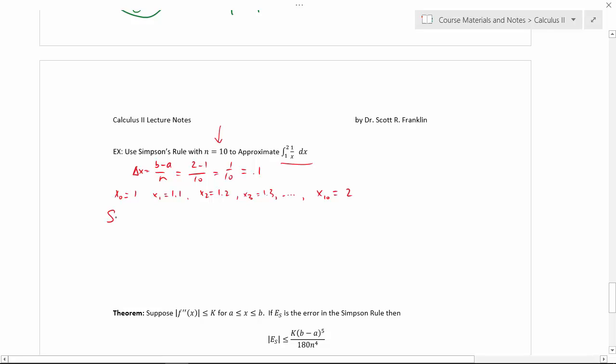Now Simpson's rule says that s, this one-third Simpson's rule says s sub 10 would then be delta x over 3 times f at 1 plus 4 times f at 1.1, plus 2 times f at 1.2, and you keep alternating the 4s and the 2s, so your next to last one would be 4 times f at 1.9 plus f at 2.